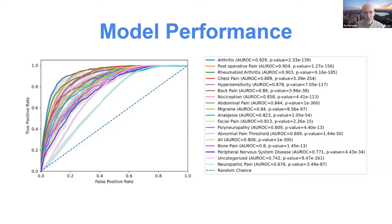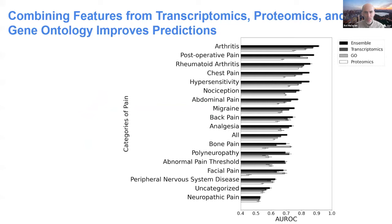Overall, the model performed really well. For some pain types it performed better than others — arthritis and rheumatoid arthritis were in the top three, while for neuropathic pain the performance was not as good. We also examined how much each resource — transcriptomics, proteomics, and GO terms — contributed to the predictions. The overall ensemble model is better than each individual modality of data, and having all three together contributes to an improved level of predictions.